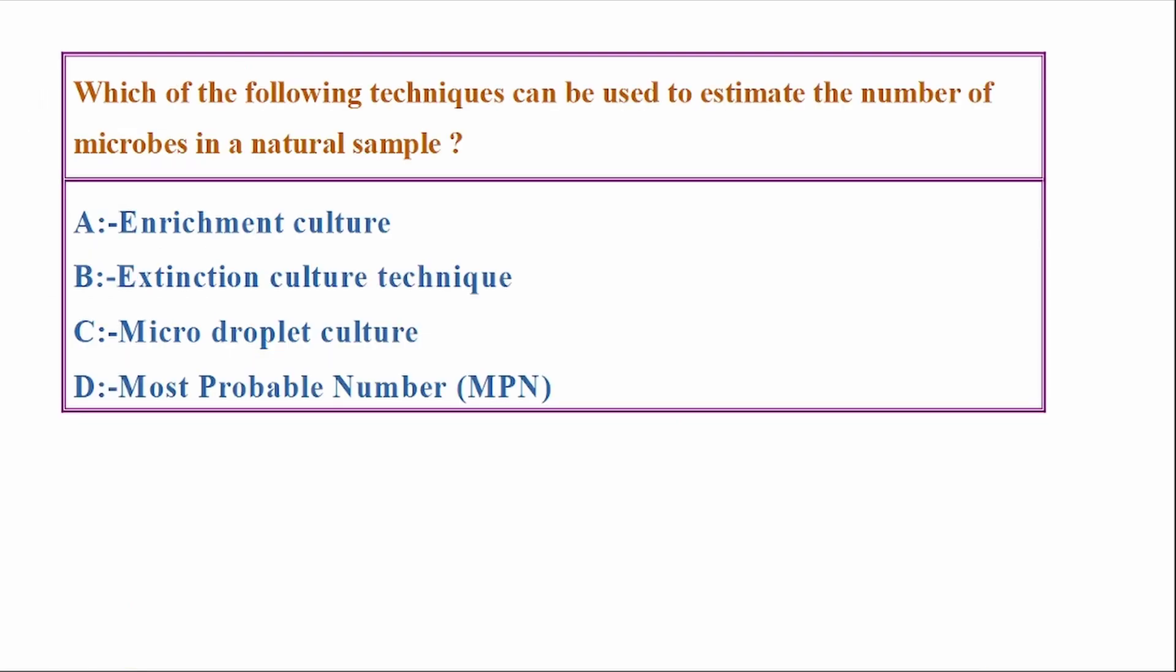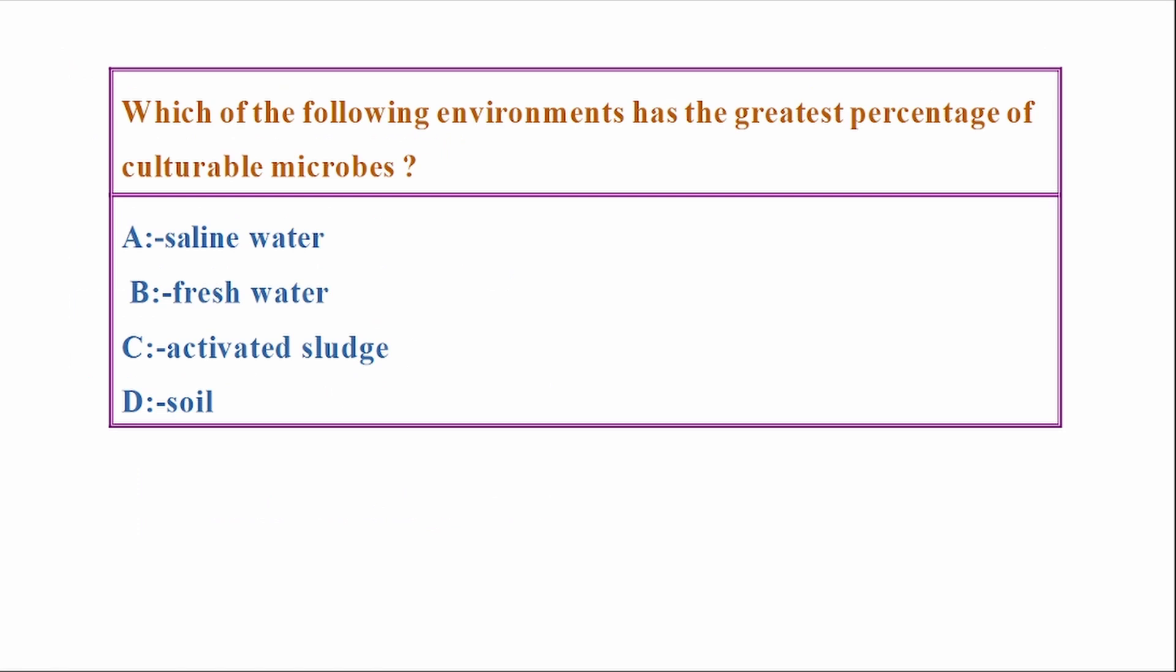Which of the following techniques can be used to estimate the number of microbes in a natural sample? Options: enrichment culture, extinction culture, microdroplet culture, most probable number MPN. Answer: Option D, most probable number MPN.